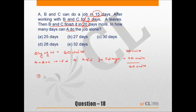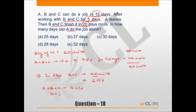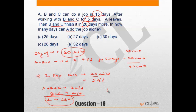B and C complete the remaining 40 units in 20 days, so B and C do 2 units per day. Since A, B, and C together do 4 units per day and B and C do 2, A alone does 2 units per day. With 60 total units, A takes 60/2 = 30 days to complete the work alone.